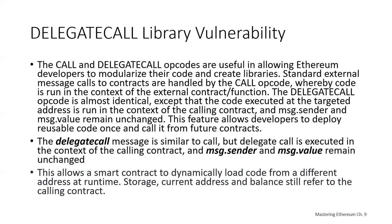But this is a big difference — this idea that the delegated call is executed in the context of the calling contract. We're going to take a look at some potential vulnerabilities that can be created if you do this. Basically, this is going to allow a smart contract to dynamically load code from a different address at runtime. The storage, the current address, and the balance all refer to the calling contract.